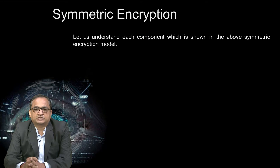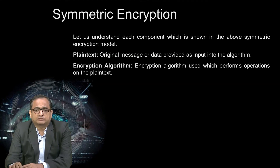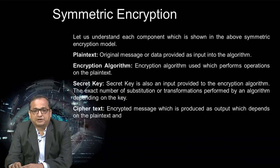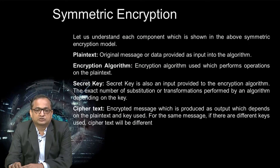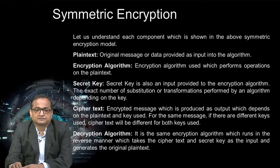Let us understand each component of the symmetric encryption model. Plain text: the original message or data provided as input. Encryption algorithm: performs operations on the plain text. Secret key: also an input to the encryption algorithm; the number of substitutions or transformations performed depends on the key. Ciphertext: the encrypted message produced as output, which depends on both the plain text and the key — different keys produce different ciphertexts. Decryption algorithm: the same encryption algorithm run in reverse, which takes the ciphertext and secret key as input and generates the original plain text.